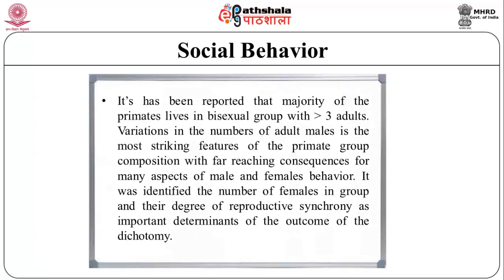It has been reported that the majority of primates live in bisexual groups with greater than three adults. This sets them apart from other mammals, in which permanently bisexual groups are much less common. Variation in the numbers of adult males is the most striking feature of primate group composition, with far-reaching consequences for many aspects of male and female behavior. The number of females in a group and their degree of reproductive synchrony are important determinants of the outcome of this dichotomy.